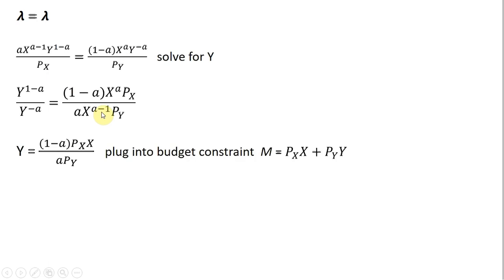The next step, just following the rules of exponents, the left-hand side will simplify very nicely down to just Y. The right-hand side, this X raised to the power of A and this X raised to the power of A minus 1 just simplifies to X. So we have that.